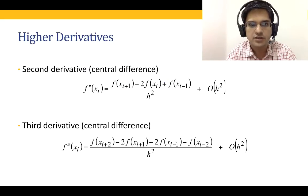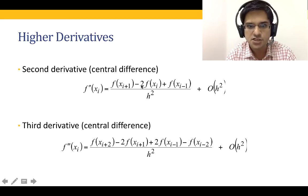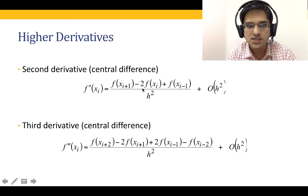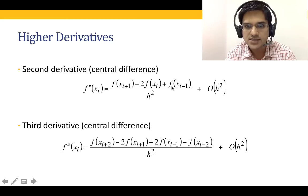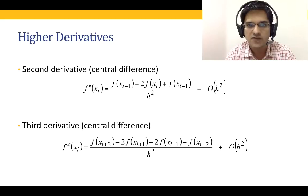In the previous lecture we saw how to compute the first derivative. Now if we want to compute the second derivative using the central difference formula, we get f''(x) = [f(x+h) - 2f(x) + f(x-h)] / h². Using subscripts i+1, i, and i-1, this central difference formula is h² accurate. Recall from the previous lecture that f'(x) = [f(x_{i+1}) - f(x_{i-1})] / 2h — that was the first derivative using the central difference formula. This is the formula for the second derivative.